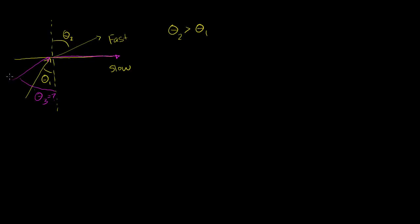And if the light never escapes into the fast medium, and if I had an incident angle larger than theta 3, that the light won't even travel along the surface — it'll actually reflect back. So you actually have something called total internal reflection. To figure that out, we need to find at what angle theta 3 do we have a refraction angle of 90 degrees. That incident angle is going to be called our critical angle, because anything larger than that means no refraction — the light won't escape the slow medium and will just reflect at the boundary back into the slow medium.